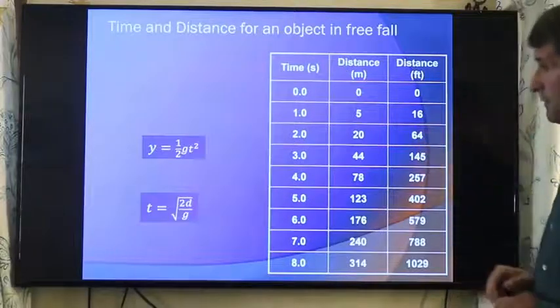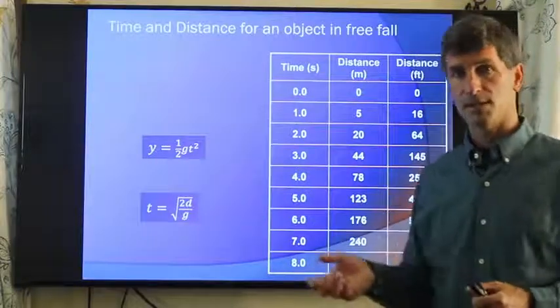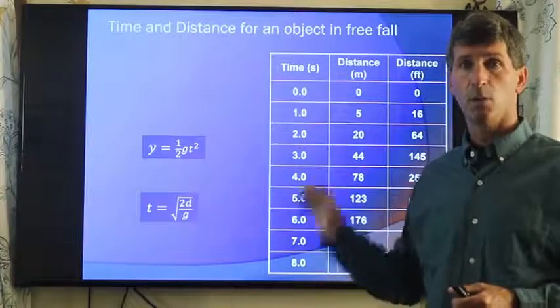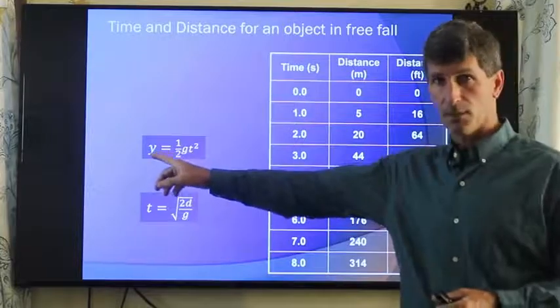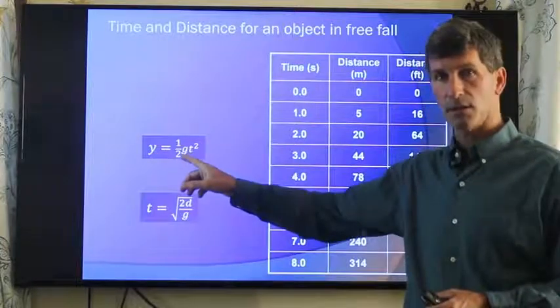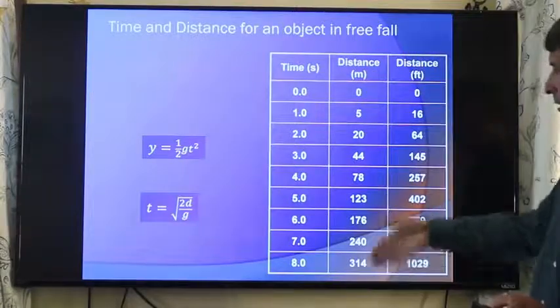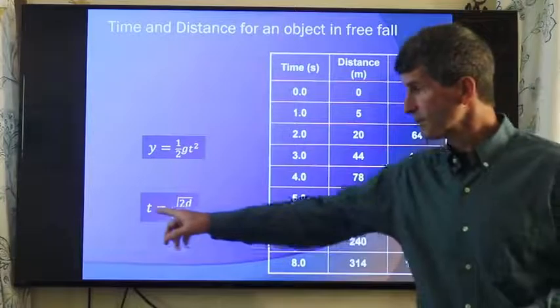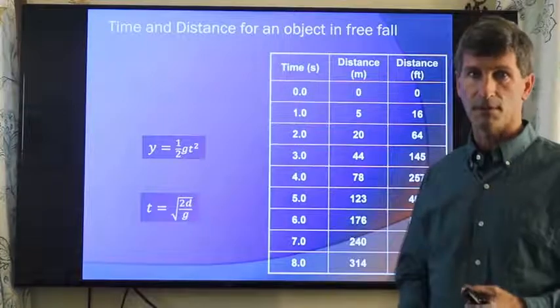Now, distance of fall. We have the kinematic equation that said x is equal to V zero T plus one-half AT squared. So our distance, with no initial velocity, would be one-half the acceleration of gravity times time squared. This is how far you fall in a given amount of time. If you want to turn it around, how long does it take you to fall at a given distance? Well, we can solve for T in this equation and do the same thing.